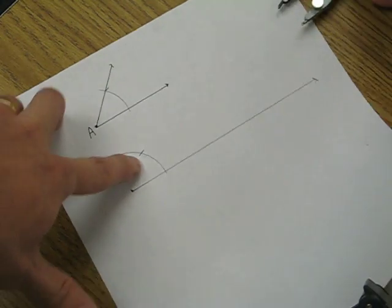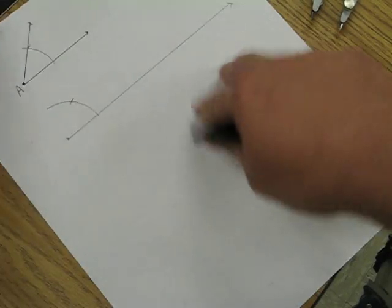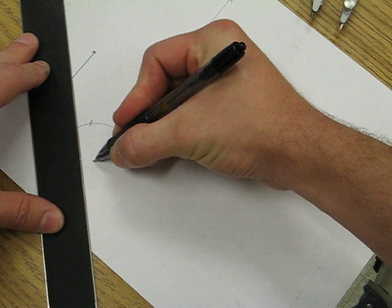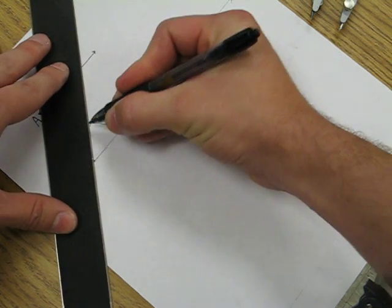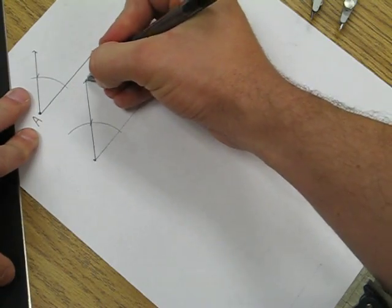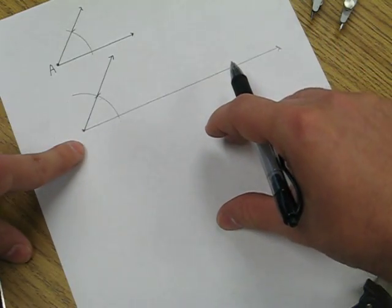Alright, and now we can use our straight edge to connect our endpoint of our ray with the mark of our arc. And now we have two congruent angles.